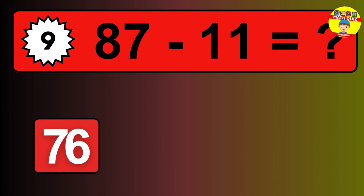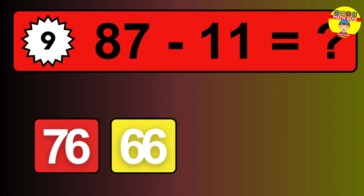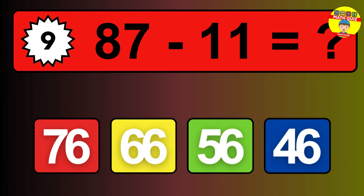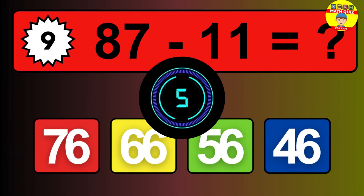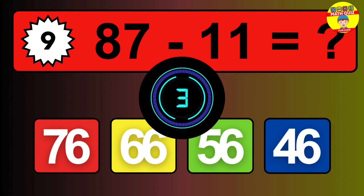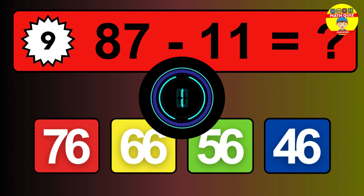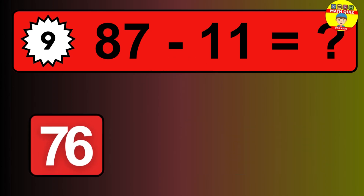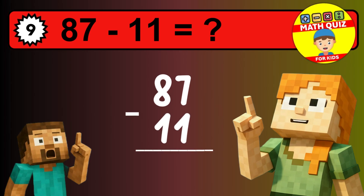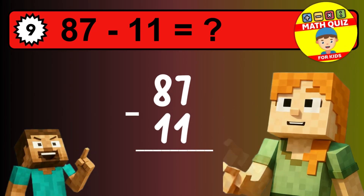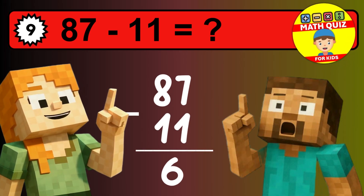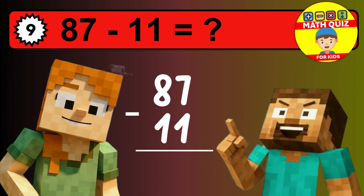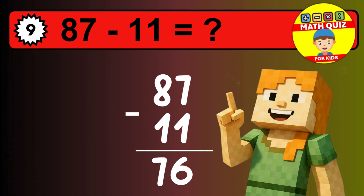What is 87 minus 11? Time to think. Let's solve this step by step. We start with the units: 7 minus 1 is 6. Then we go to the tens: 8 minus 1 is 7. The final answer is 76.